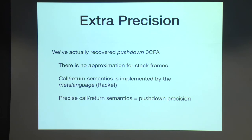Back to this note about precision. What we've actually recovered is not a zero CFA analysis, but actually a pushdown zero CFA analysis. And the reason for this is that there is no approximation for stack frames or control flow at all. In fact, the call and return semantics for the abstract interpreter is actually handled by the meta language, which is racket. And because racket is precise in its semantics for call and return, we get precise abstract semantics for calls and returns, which is what is at the essence of pushdown precision. In fact, it exactly is pushdown precision.